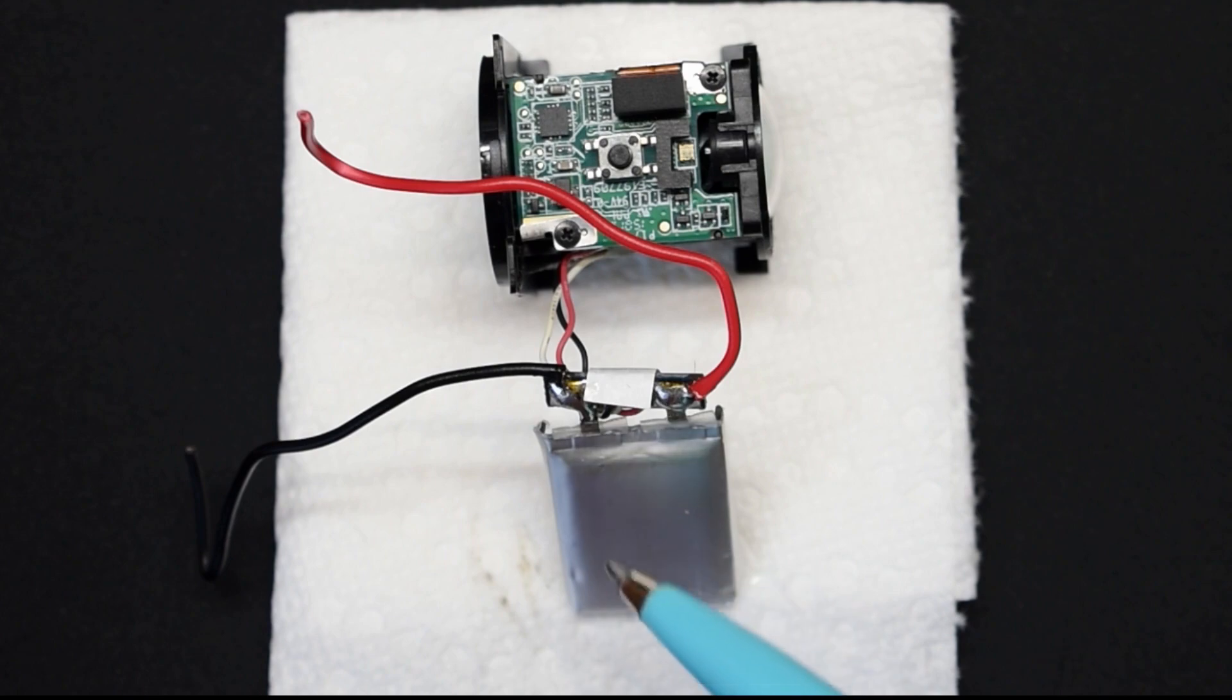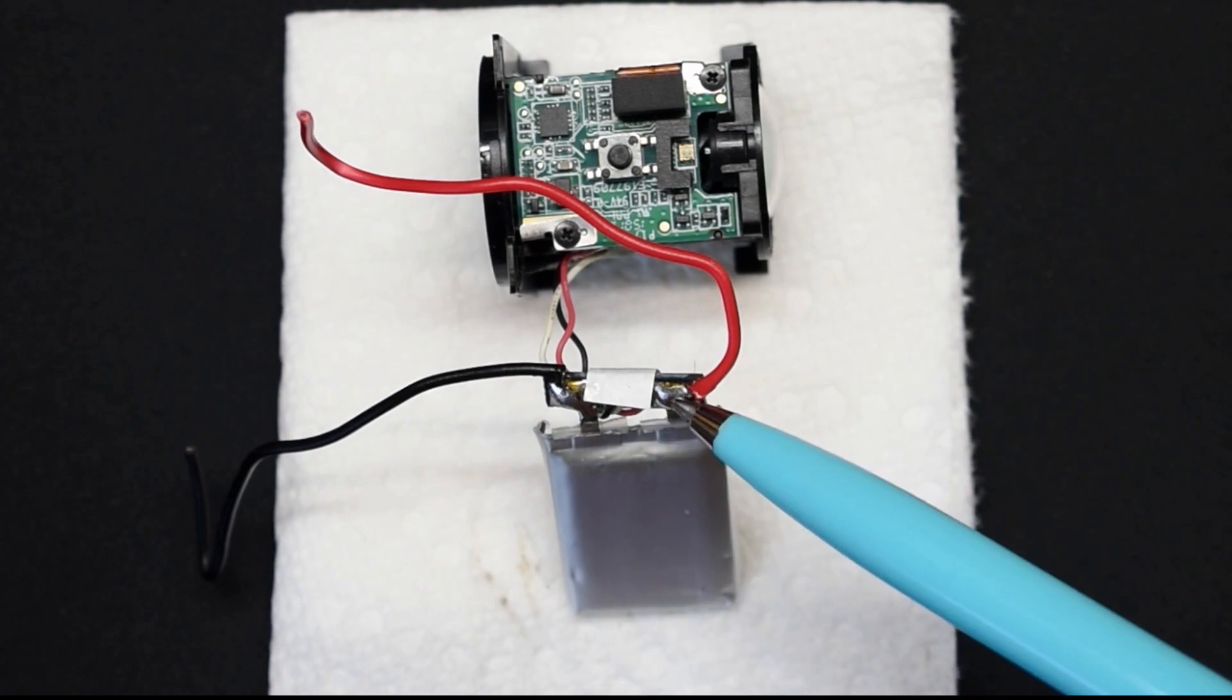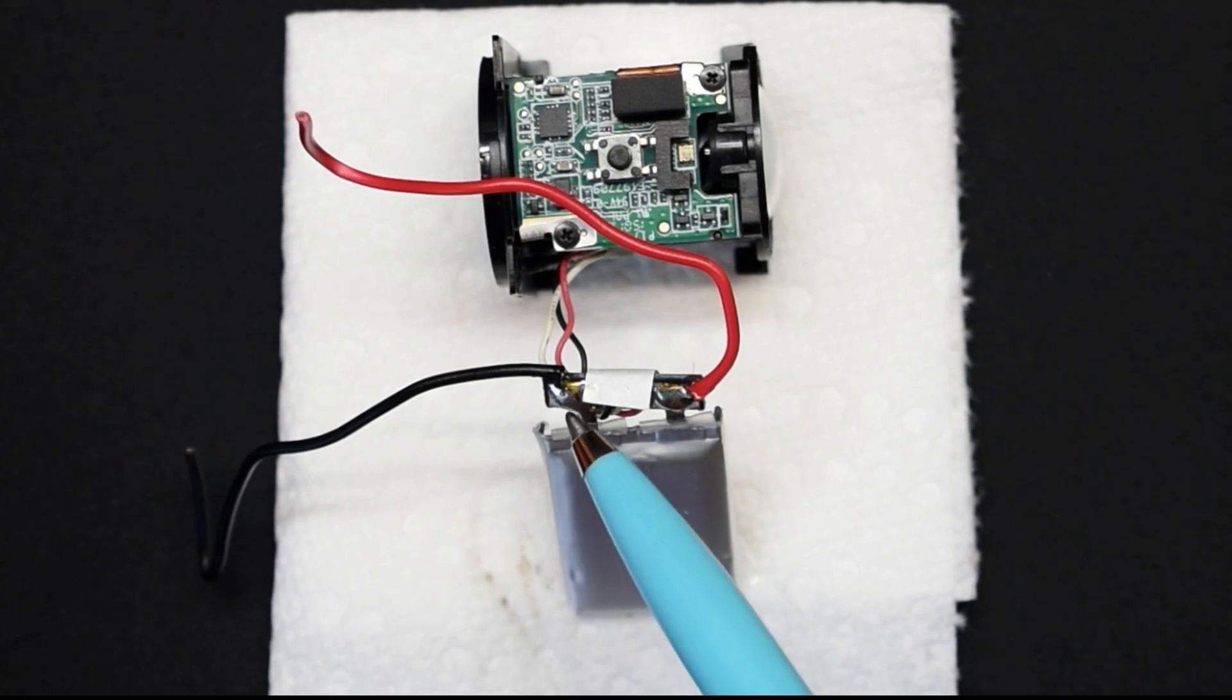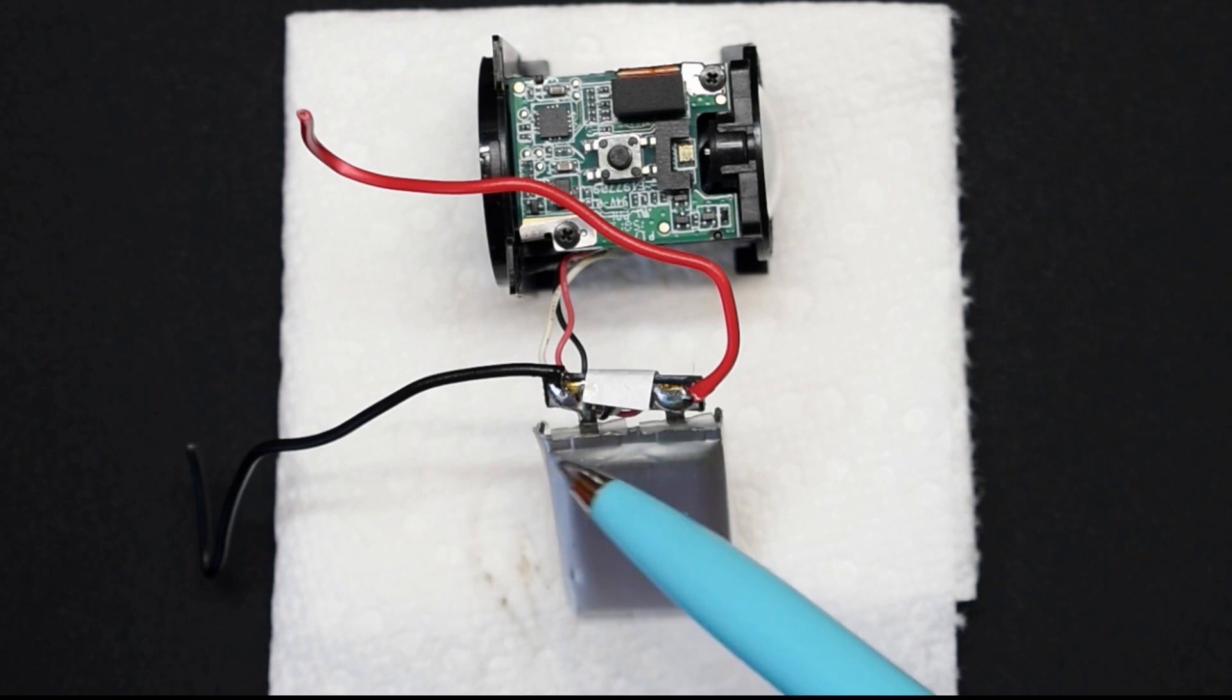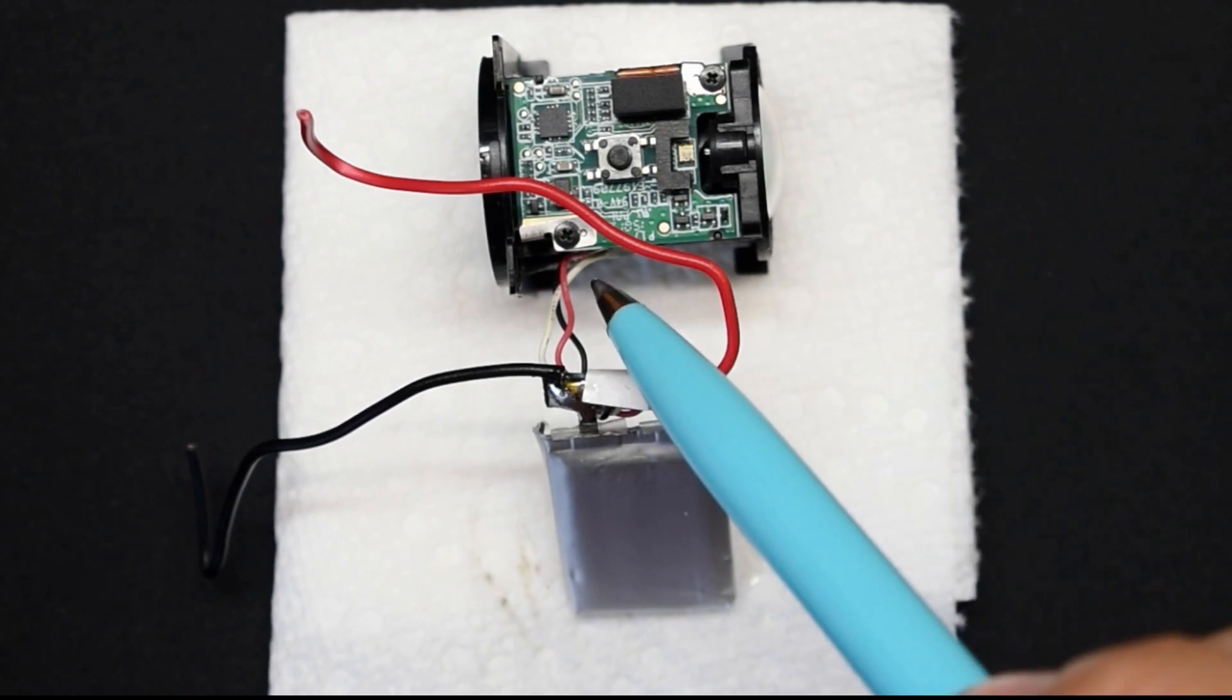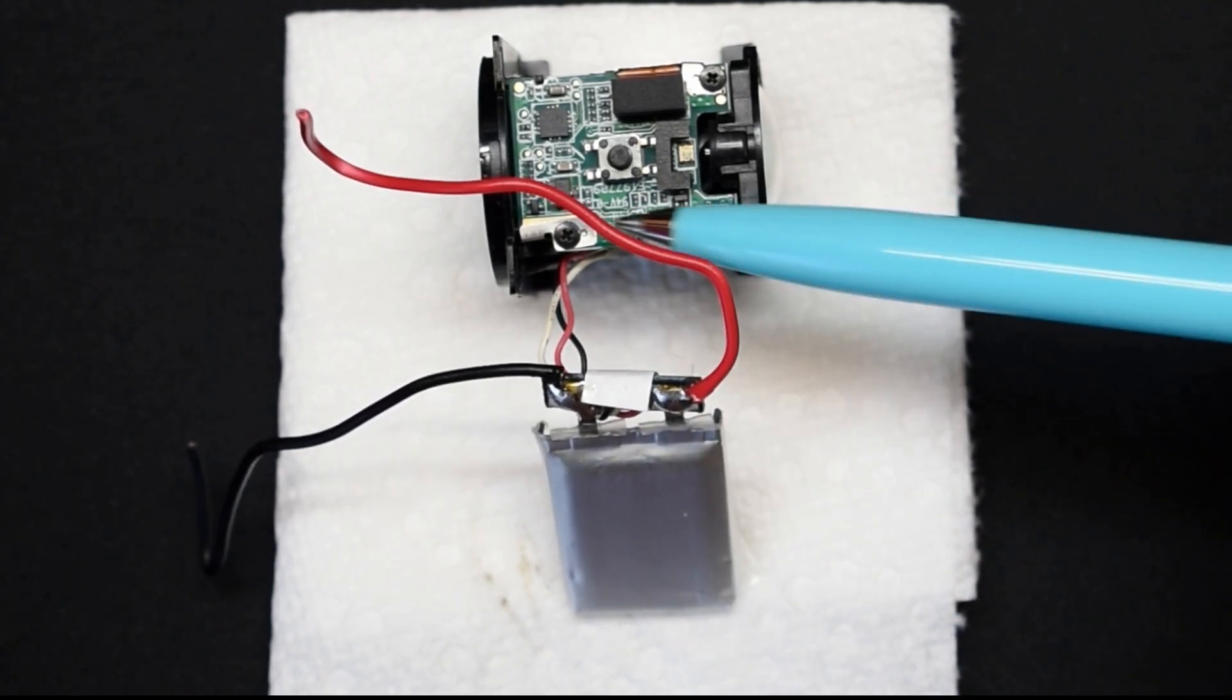Right here you can see the lipo cell is now soldered in position. The positive also has the red wire going to the opposite side, and on the negative we also have the black wire leading to the other cell. Now what I need to do is take this end very carefully, fold it over this way, so when it's in here it will lay flat right in this position.